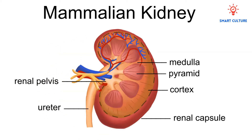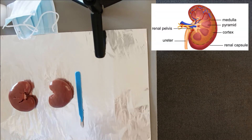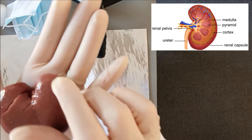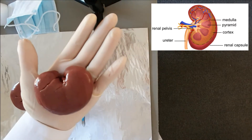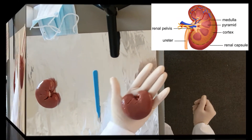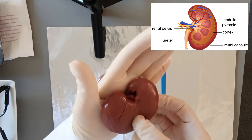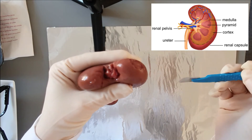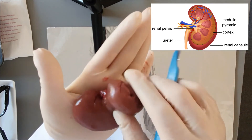Let's move on to the dissection of the mammalian kidney. This is the kidney of a sheep. Sheep have two kidneys — they are bean-shaped organs that play a major role in the processes of excretion and osmoregulation. The renal capsule has already been removed. The renal capsule is a tough semi-transparent membrane that covers the outer surface of the kidney. The rounded side of the kidney is referred to as the convex side, and the indentation on the concave side is called the hilus.